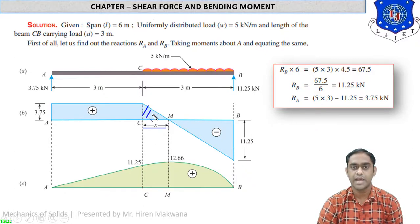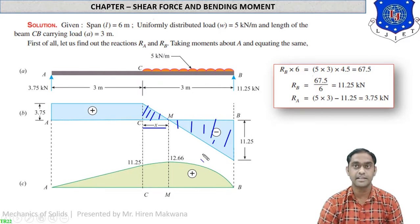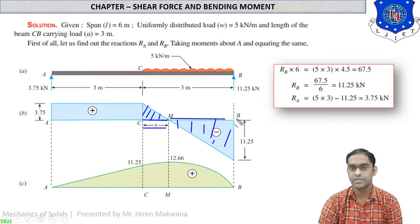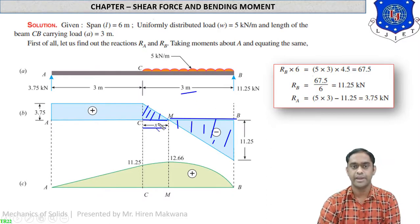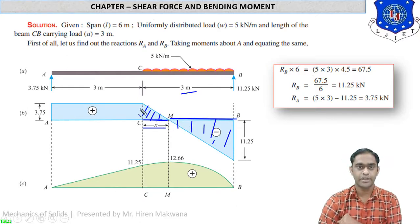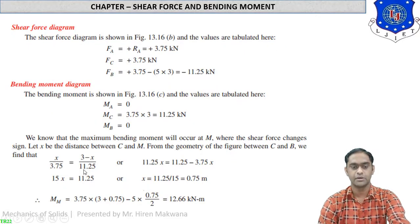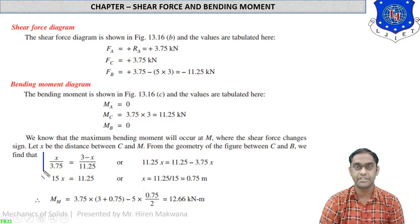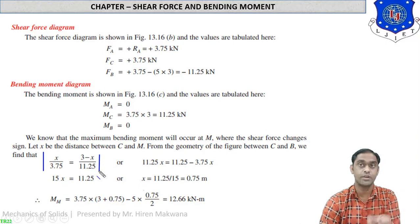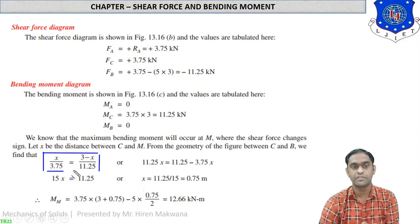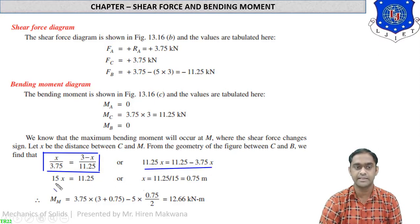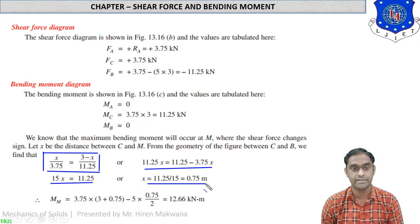To find distance X, use the property that the two triangles formed by the SF diagram are similar. Taking the ratio base/base = height/height: X / (3 − X) = 3.75 / 11.25. Solving this gives X = 0.75 meter. This is the distance from C to the zero shear point M.